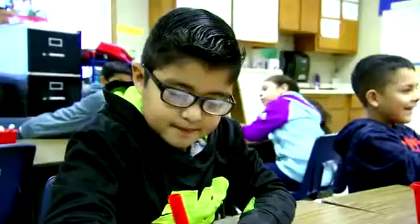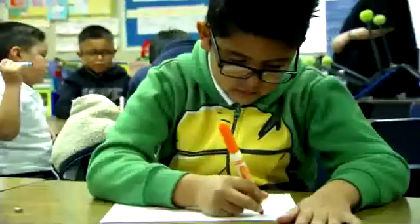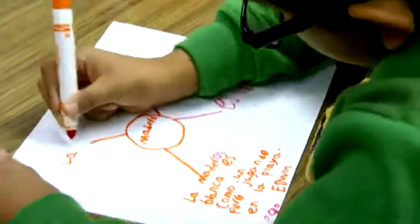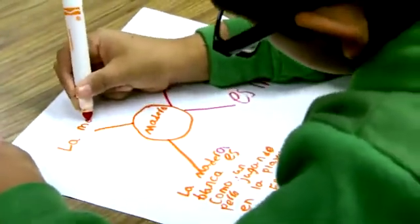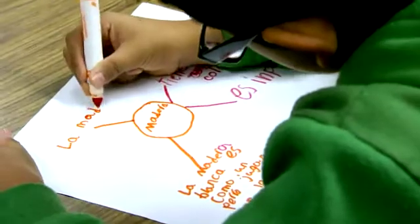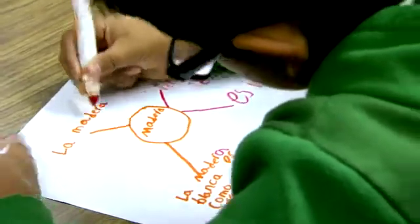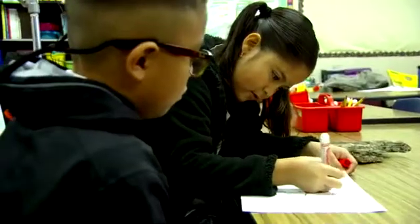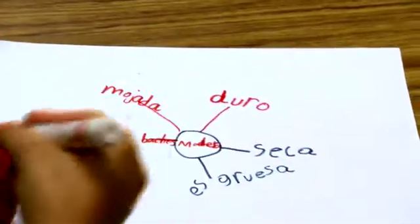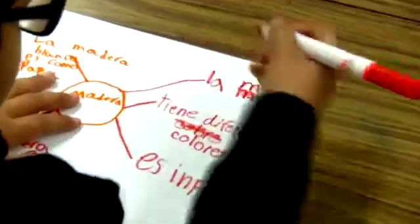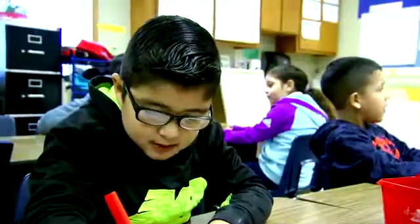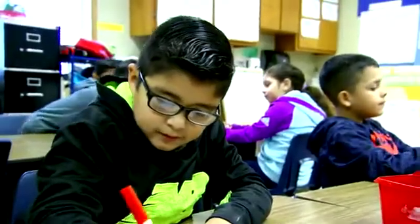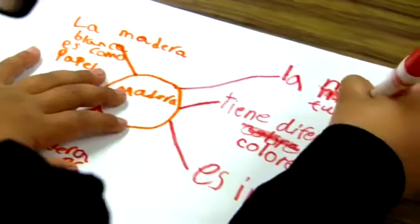The teacher then passed out some paper and students independently completed a web. The different color pens allowed the teacher to assess what kind of language her students were using. This is one of those places where we think about graphic organizers in SEAL — using them into, through, and beyond. The students are comfortable with a web; they know what the language of description is, what a simile is, and now they're applying all of that content independently.